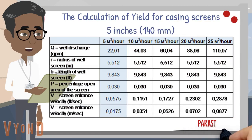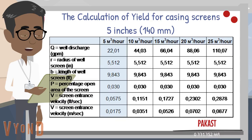The calculation of yield for casing screens, 5 inches — the resulting calculations can be seen in the table. We can see that the calculated input speed for the 5-inch screen is within the acceptable values. It is less than the upper limit of 1.5 feet per second recommended by the standard.